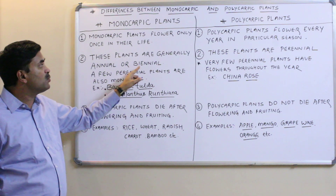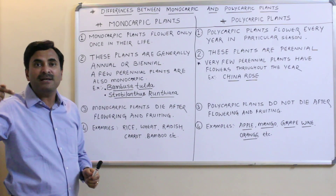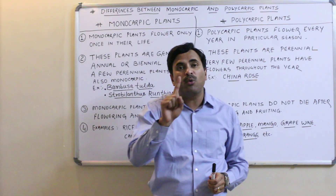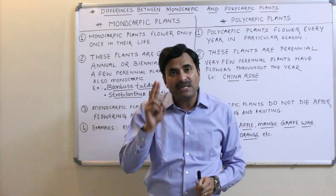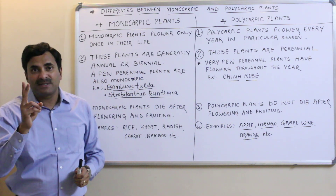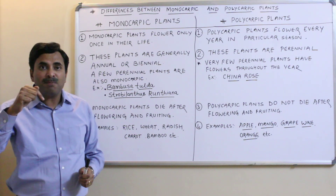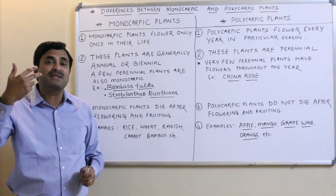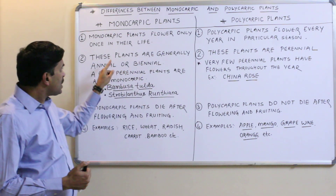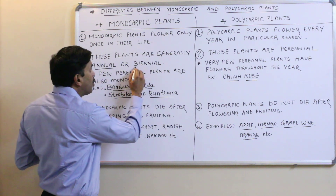Monocarpic plants are generally annual or biennial. There are three types of plants: annual, biennial, and perennial. Annual plants complete their life cycle in only one season. Biennial plants complete their life cycle in two years. Perennial plants live for more than two years. Generally, monocarpic plants are annual or biennial.